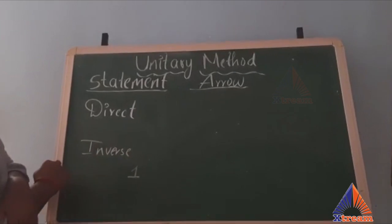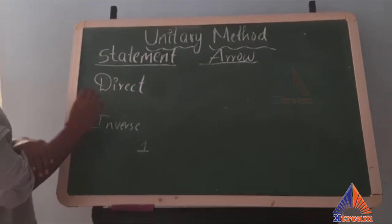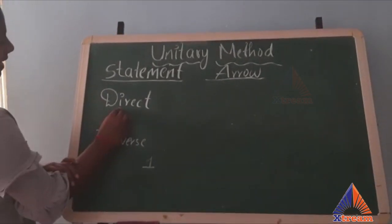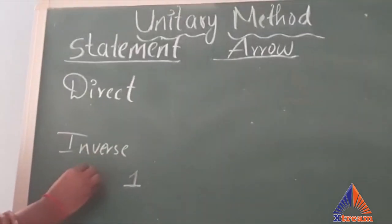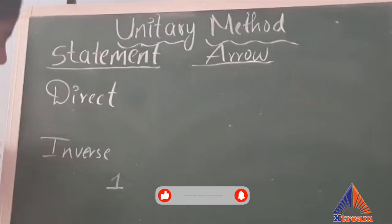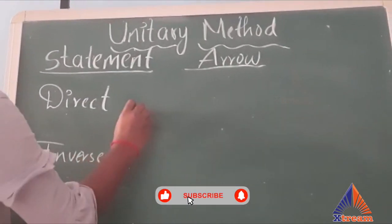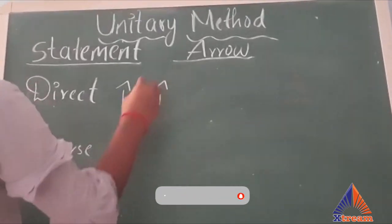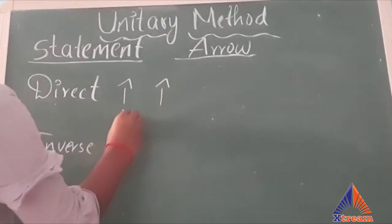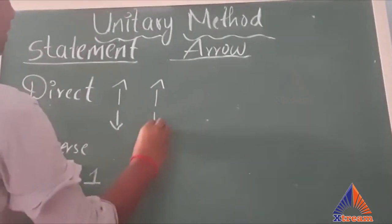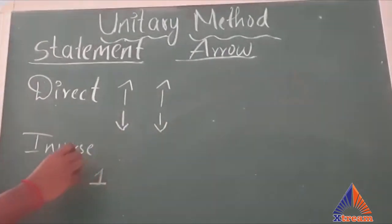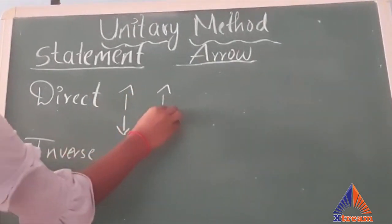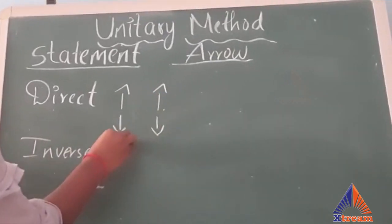Again in unitary method, we will come across two variations. One is direct variation and another one is inverse variation. In direct variation, if one quantity increases, the other quantity will also increase. And if one quantity decreases, the other quantity will also get decreased.